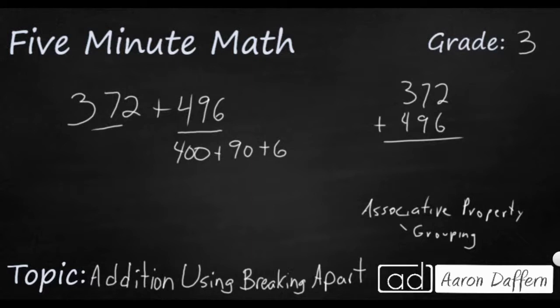Then what we can do is take our 372 and add that. Because really, all I did was just regroup my 496 into 400 plus 90 plus 6. We can add that one step at a time. Here we're just adding in the hundreds place. So 372 plus 400, well, that added together is going to be 772. All I did was change the hundreds place.